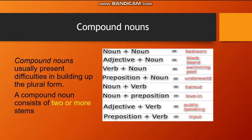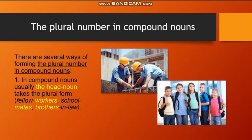Compound nouns usually present difficulties in building up the plural form. A compound noun consists of two or more stems, for example, bedroom, blackboard, swimming pool, and others. There are several ways of forming the plural number in compound nouns. First, in compound nouns the head noun usually takes the plural form, for example: fellow workers, schoolmates, brothers-in-law.